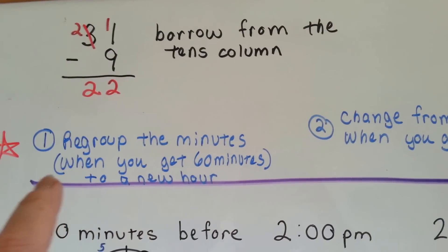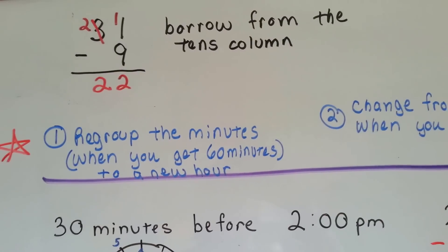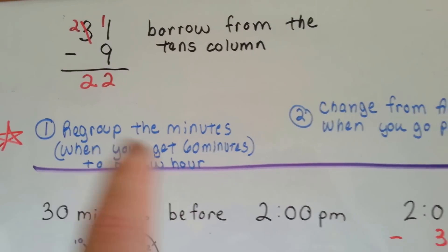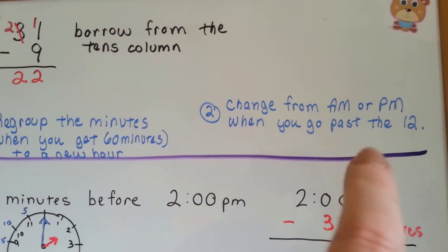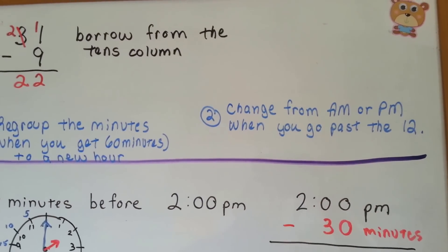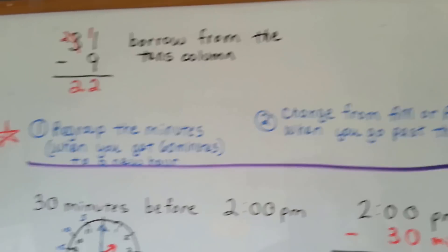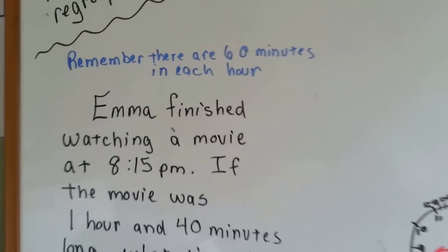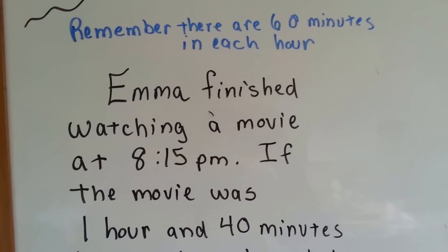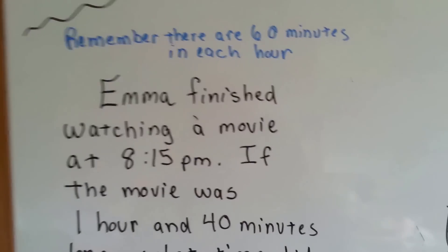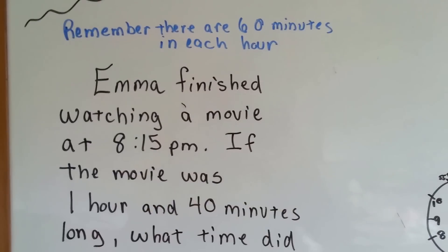Remember, you regroup the minutes when you get to 60 minutes — it's another hour. And you have to change from AM to PM when you go past the 12. Remember there are 60 minutes in each hour. That's really important to remember.